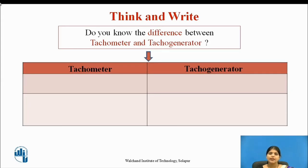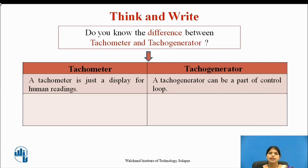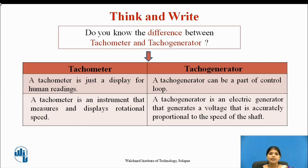Let us see the difference between tachometer and tachogenerator. A tachometer consists of a tachogenerator, and a tachogenerator is usually referred to as a permanent magnet DC brush generator. A tachometer is just a display for human readings, while a tachogenerator can be a part of a control loop. A tachometer is an instrument that measures and displays rotational speed, but a tachogenerator is an electric generator that generates a voltage that is accurately proportional to the speed of the shaft.